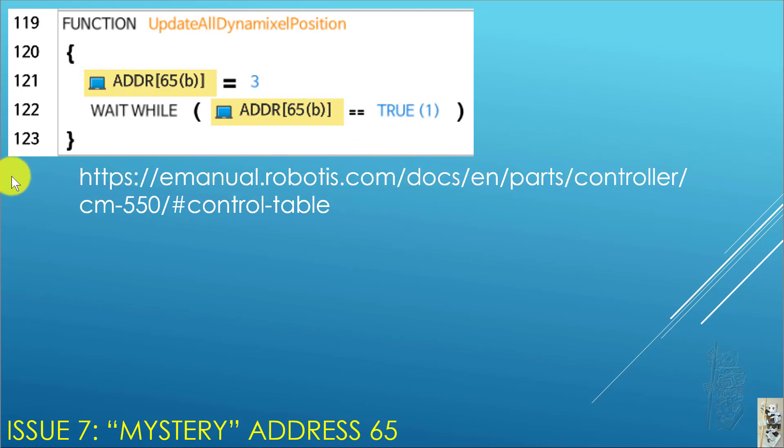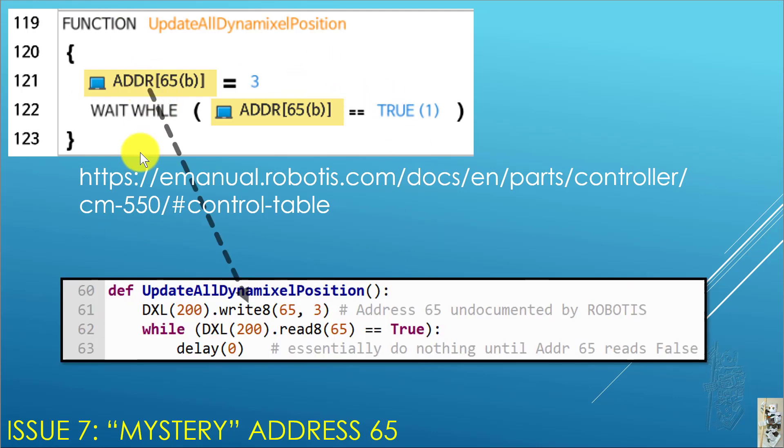Now, this is the official control table of CM550. If you go there, there's no address 65 listed. So sometimes Robotis code will use their own proprietary addresses that they don't care to give more detail information on. Luckily for this guy, all I do is just straight conversion and be done with it. So, straight conversion, you can see that it's address 65 from the CM550 controller. So, therefore, it's DXL200. I write a byte to it, that address 65. I write a 3 to it. While that thing is true, therefore, while DXL200, I read a byte from it from address 65. As long as it's true, I don't do anything. And this one here, also, is more of a Python syntax thing. It doesn't like to have an empty body for a while. So, I just put in delay 0. So, essentially, it does nothing until this thing reads false and then it quits this function.